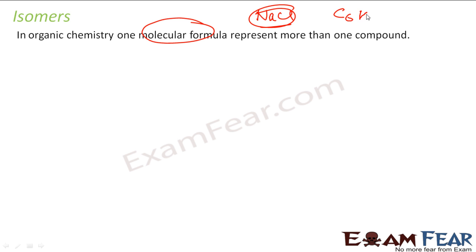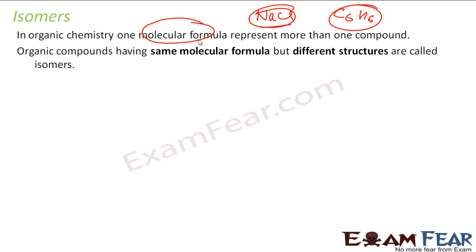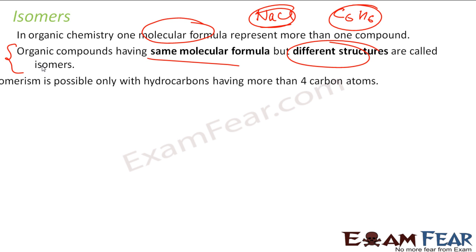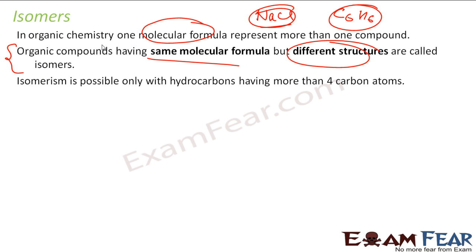But with isomers, when I say C6H12, you don't know — it can have three or four structures. This property is called isomers, where you have more than one structural formula for a given molecular formula. Compounds having the same molecular formula but different structures are called isomers.